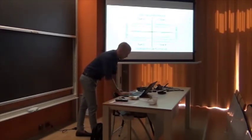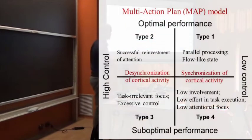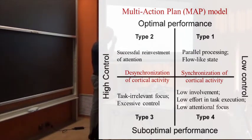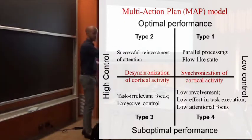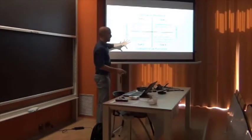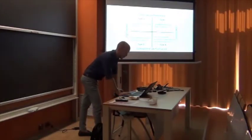If we come back to the model they use, the multi-action plan model, what they expect to find from the event-related synchronization-desynchronization analysis is that the type 1 and type 4 performances will be related to the synchronization of activity, so the person will be more relaxed. But in one case, will be more relaxed because it's in a flow state, it's not exerting too much control. And in the other case, it will be too relaxed, but not because it's in a flow state, but just because it's deconcentrated and it's still performing the shot, that's why it goes better. In the other case, they expect a desynchronization of activity, meaning that you have a good performance but you're not completely relaxed, you're trying to focus a lot. And in the other case, you're still trying to focus a lot but you're doing badly. So they want to see what happens in these four occasions.